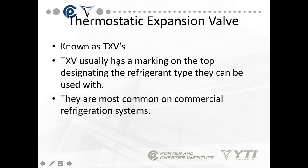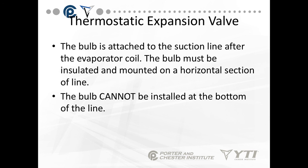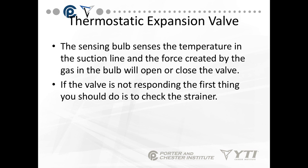Thermostatic expansion valves are the ones you're going to be seeing most often in the field. They're known as TXVs. The TXV has a marking on the top designating the refrigerant type it can be used with. They're the most common on commercial refrigeration systems. The TXV is a temperature-actuated metering device — the valve responds to load variations. The whole purpose of the TXV is to keep the temperature of the evaporator coil at a constant. There's a bulb attached to the suction line after the evaporator. The bulb must be insulated and mounted in a horizontal section. The bulb cannot be installed in the bottom of the line — we don't want it sensing the oil being returned. We want true sensing of the refrigerant temperature. The sensing bulb contains a gas that will open or close the valve depending on whether the gas expands or contracts — anytime you heat a gas, it expands; anytime you cool a gas, it contracts.